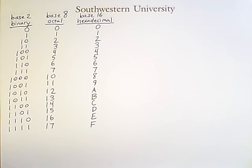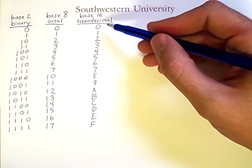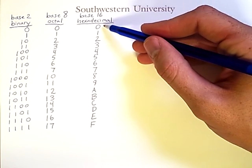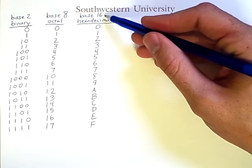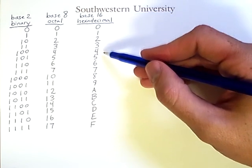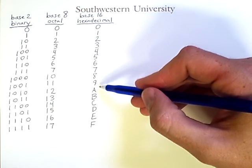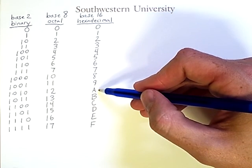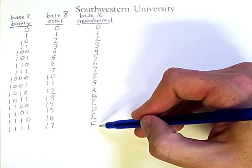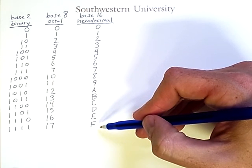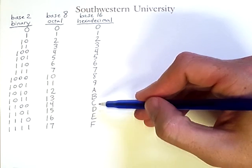Notice that I've written out the first 16 numbers in each of these number systems. Of particular interest is the hexadecimal system, which has a base of 16, and therefore has to start using letters from 10 to 15 to represent digits.